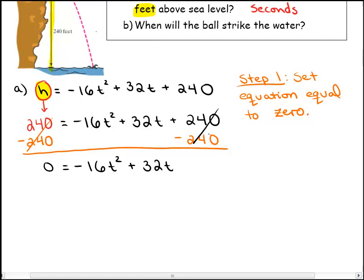What's the next step? GCF. The GCF of this polynomial is 16 and t — so 16t. I'm also going to factor out a negative, because whenever my leading term is negative, I feel more comfortable making it positive. So I'm going to factor out a negative 16t.